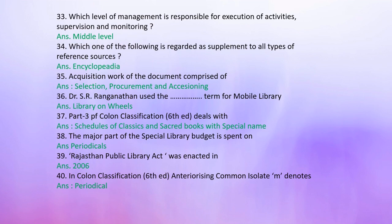Question 31: Arrange the following state public library acts in chronological order — Gujarat Public Library 2001, Bihar 2008, Goa 1993, Arunachal 2009. Question 33: Which level of management is responsible for execution of activities, supervision, and monitoring? Answer: Middle level. Question 34: Which is regarded as a supplement to all types of reference sources? Answer: Encyclopedia.